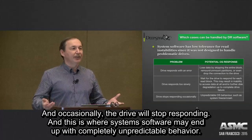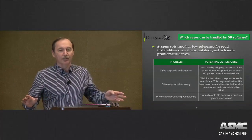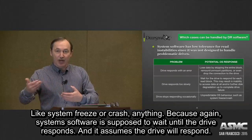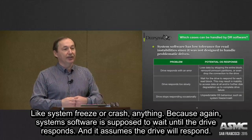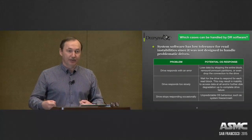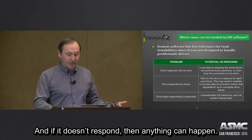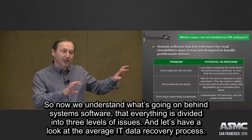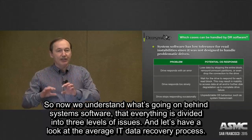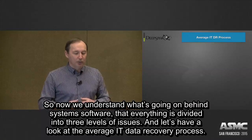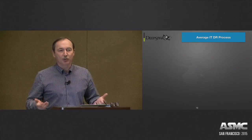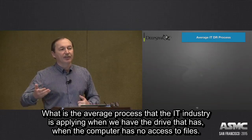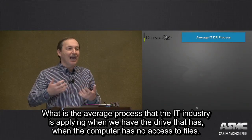This is where system software exhibits completely unpredictable behavior — like a system freeze or crash — because system software is supposed to wait for the drive to respond and assumes that it will. If the drive doesn't respond, anything can happen. So now we understand a little of what's going on behind system software, and that everything is divided into three different levels of issues. Let's look at what the average IT recovery process looks like — what process the IT industry applies when a computer has no access to files.